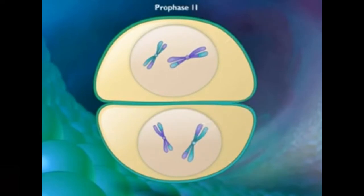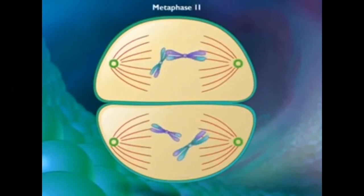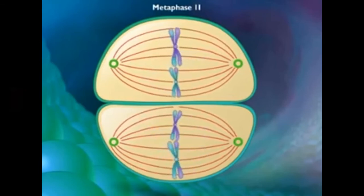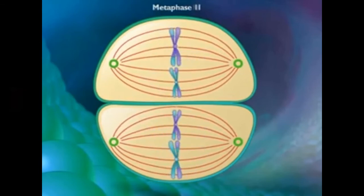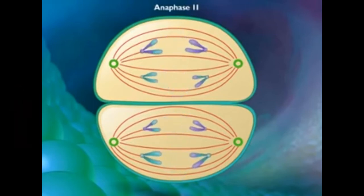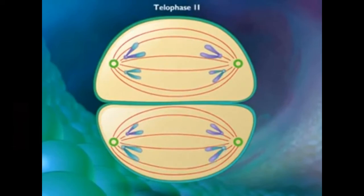During prophase 2, the nuclear envelope disappears and new spindle fibers form. In metaphase 2, the spindle fibers bind to both sides of the centromeres, and the chromosomes align at the metaphase plate. In anaphase 2, the spindle fibers pull the sister chromatids to the opposite sides of the pole.